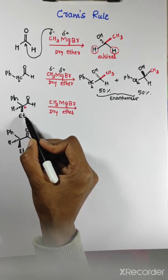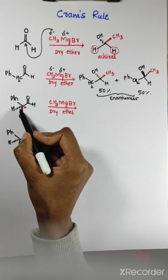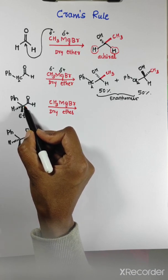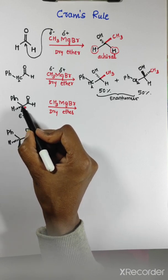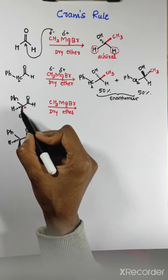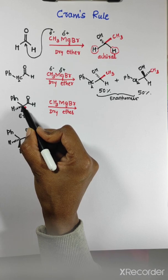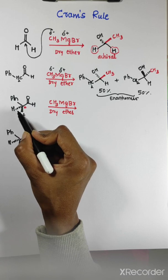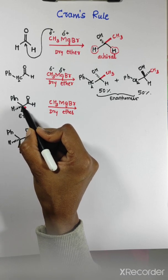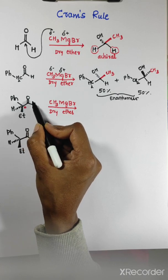Coming to the third example, which has a carbonyl group. Adjacent to this carbonyl group you are having three different groups - this is a chiral center because the carbon adjacent to the carbonyl group has four different groups: Ph, H, and Et, and one more group. This is a chiral center.